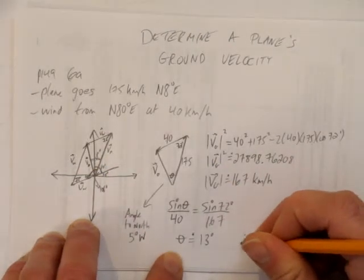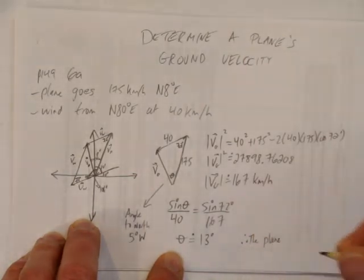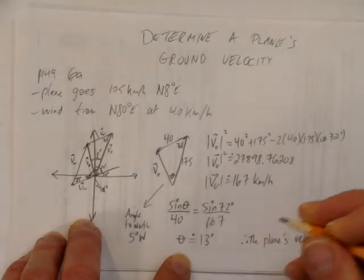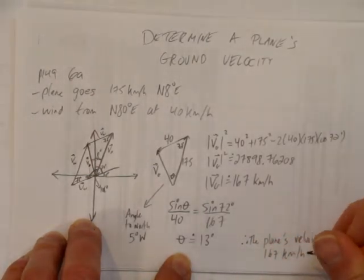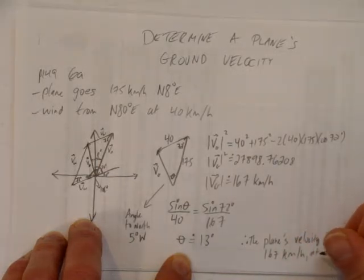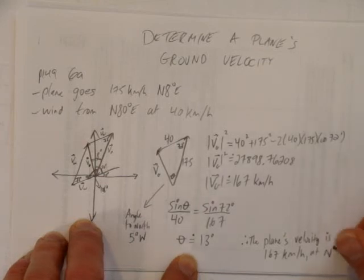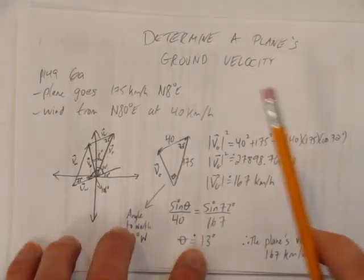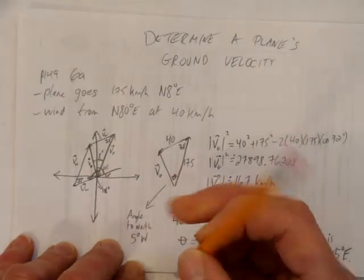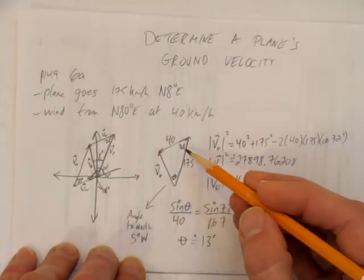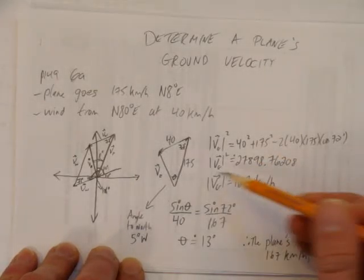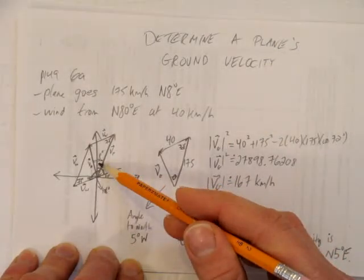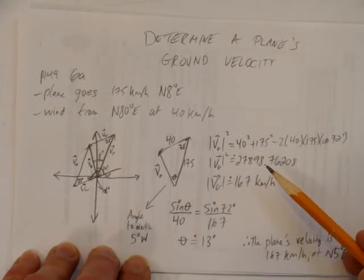So we can conclude and say the plane, and let's say the plane's velocity, and we'll give our two pieces of information. We know the velocity's magnitude is 167 kilometers per hour at a direction of north 5 degrees to the east. So, we've solved a plane's ground velocity by setting up a diagram. We used our diagram to determine the angles we needed. Those angles let us use cosine law to determine the magnitude. And then we solved for the missing angle inside our triangle and related it back to our diagram to figure out what the heading was with respect to north. And in the end, we have two things, the magnitude of the plane's velocity and its direction.